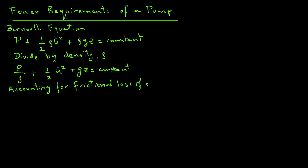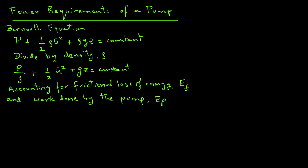Now we need to introduce a couple of terms into the Bernoulli equation to account for both the frictional loss of energy as the fluid — in our case water — flows through the piping system, and also the work done by the pump. We will represent those with terms EF for frictional loss and EP for the work done by the pump. We will rewrite the Bernoulli equation for two locations in the system.